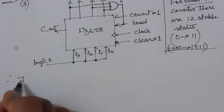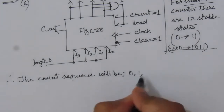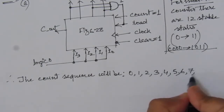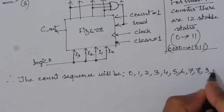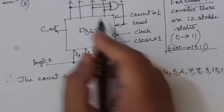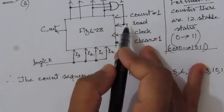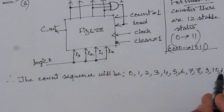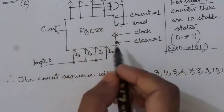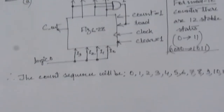Therefore, the count sequence will be 0, 1, 2, 3, 4, 5, 6, 7, 8, 9, 10, 11. After 11, it will go back to 0000 again because we have made such a mechanism: whenever we have 1011, load will be 1 and 0000 will be loaded. That means after 11 it goes back to 0 and starts counting again. So now it is a mod 12 counter.